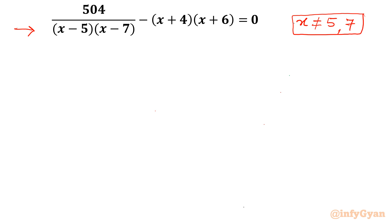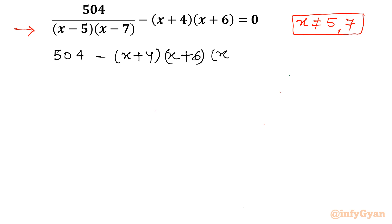Now I will multiply — as it is non-zero — this equation with the denominator (x minus 5) times (x minus 7). So the equation will convert: 504 minus (x plus 4)(x plus 6)(x minus 5)(x minus 7) equal to 0. After multiplication we will get 0 on the right-hand side.